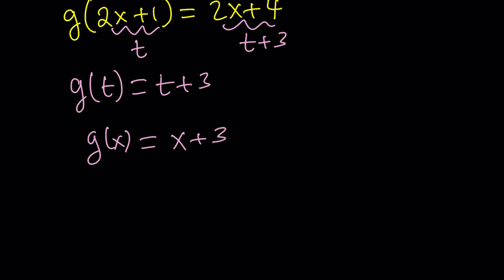Which implies g(x) = x + 3. But what do you mean? You already replaced 2x + 1 with t. Then how can you say t is x? I'm not saying t equals x. I'm just saying replace t with x. It's not the same thing. So g(x) happens to be x + 3. Awesome.